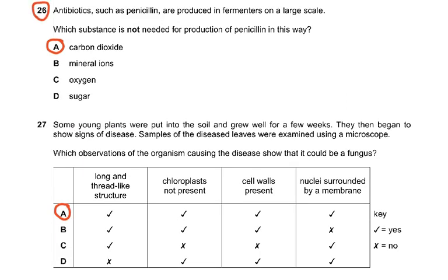In question 26, antibiotics such as penicillin are produced with fermenters. Which substance is not needed? You don't need carbon dioxide, because the microorganism — the fungus — is going to respire aerobically, using up oxygen and producing carbon dioxide. What we do need is mineral ions, oxygen, and sugars, because that is food for the fungus Penicillium which produces the antibiotic penicillin.